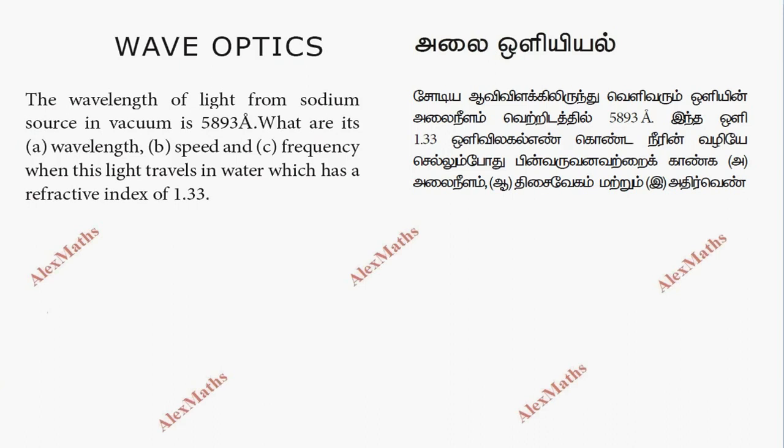Hi students, this is Alex here. In this particular problem, the wavelength of light from a sodium source in vacuum is 5893 Angstrom units. So lambda equals 5893 times 10 power minus 10 meters, since one Angstrom unit equals 10 power minus 10 meters.